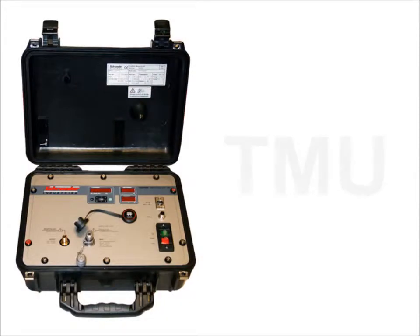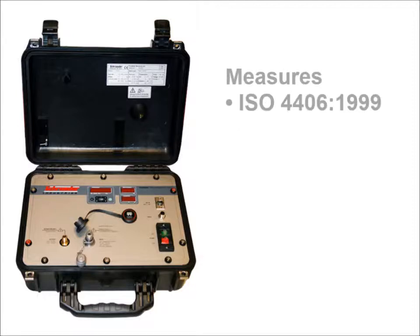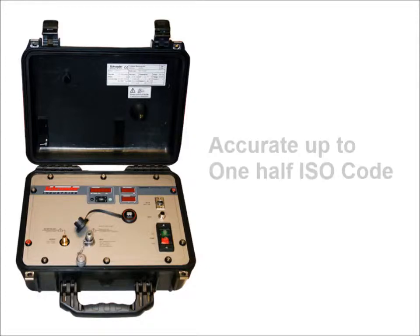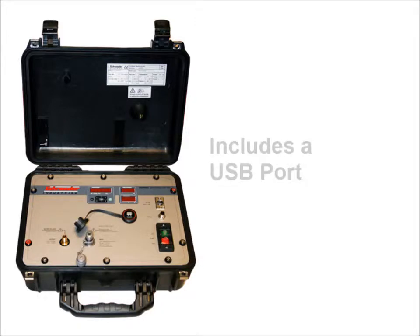It's powered by a 24 volt DC power supply which comes with the unit. The unit is capable of measuring the ISO codes, SAE codes, or the NASA codes, also called NAS codes. The measurement accuracy is plus or minus one half ISO code. The unit also has the capabilities of downloading the information through a USB port to your computer.